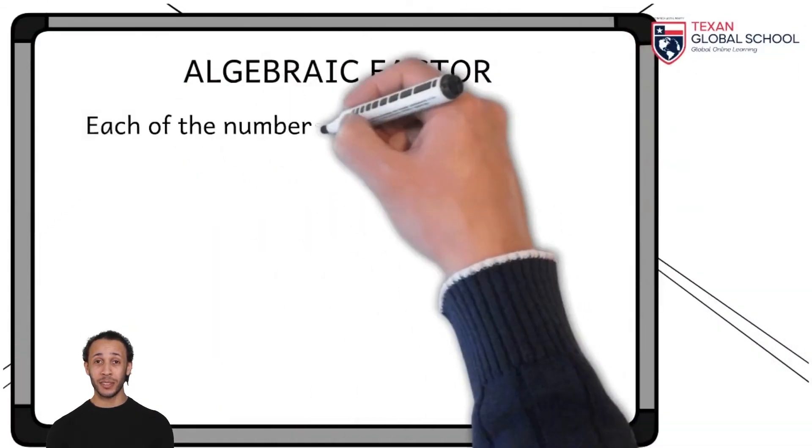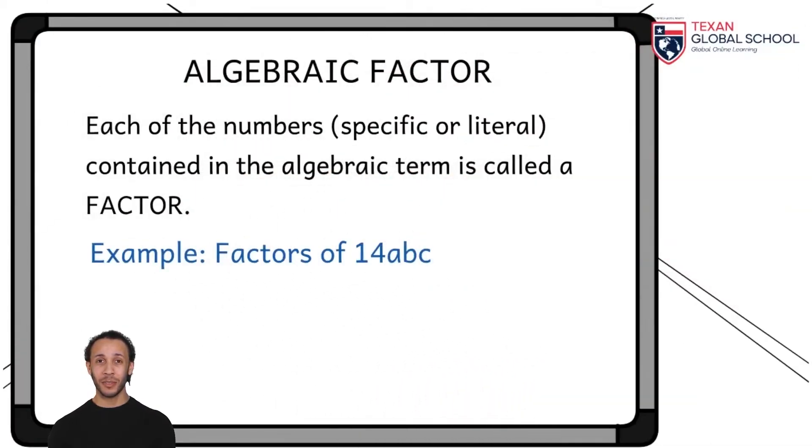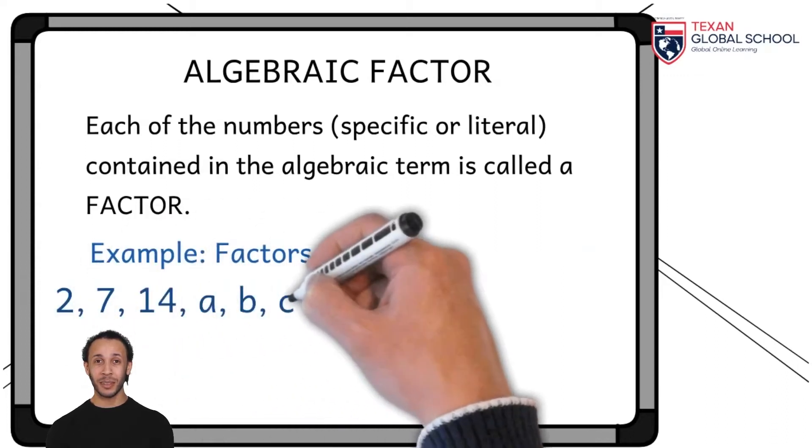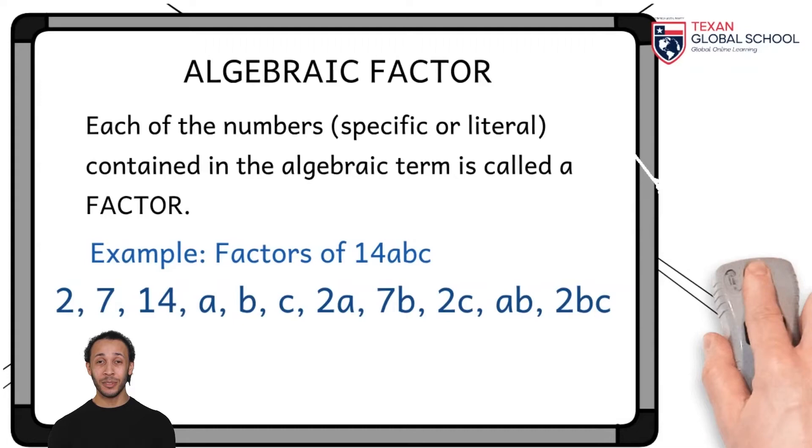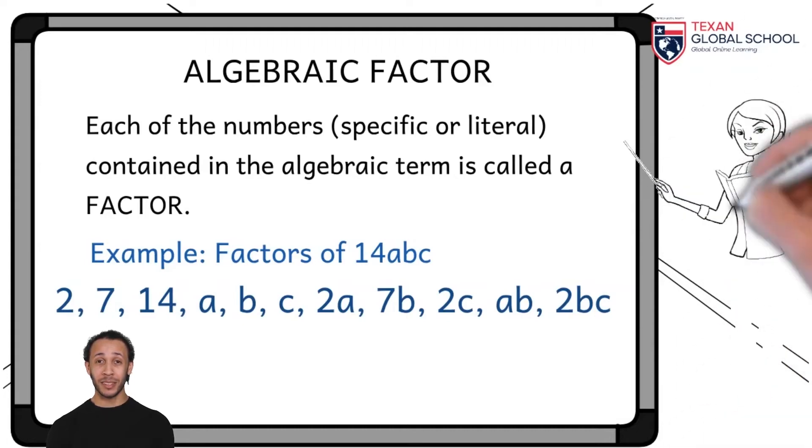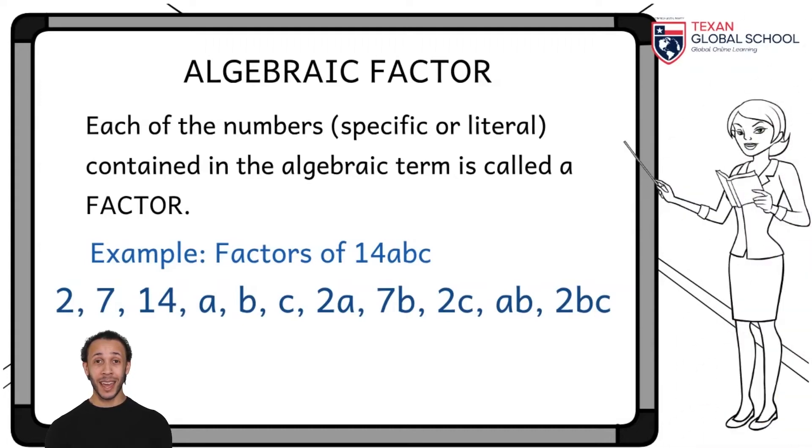Finally, we see that an algebraic term is made up of various factors. For example, what factors can be obtained from the algebraic term equal to 14abc? As we can see, the factors are 2, 7, 14, a, b, c, 2a, 7b, 2c, ab, and 2bc.